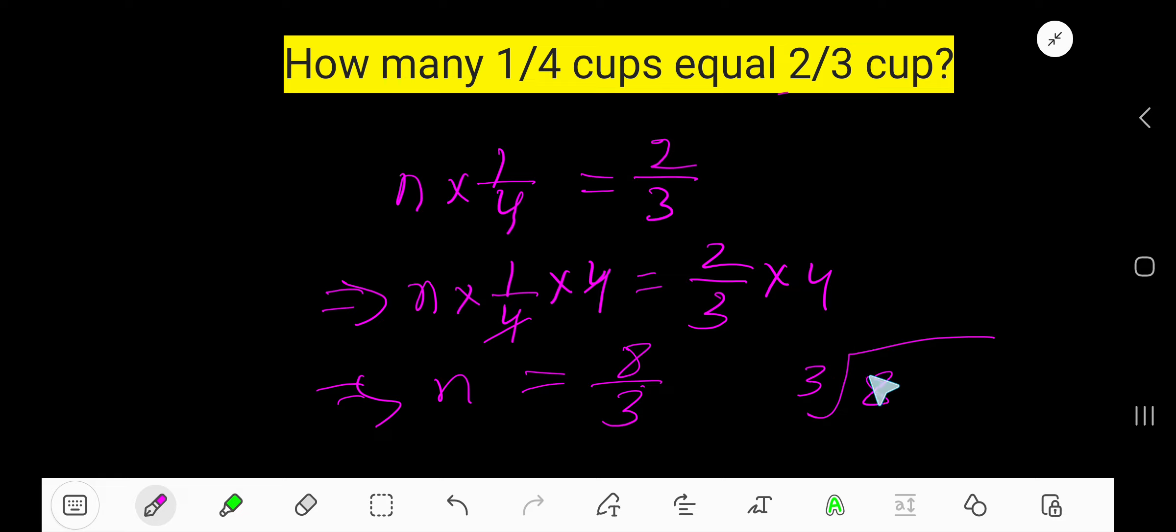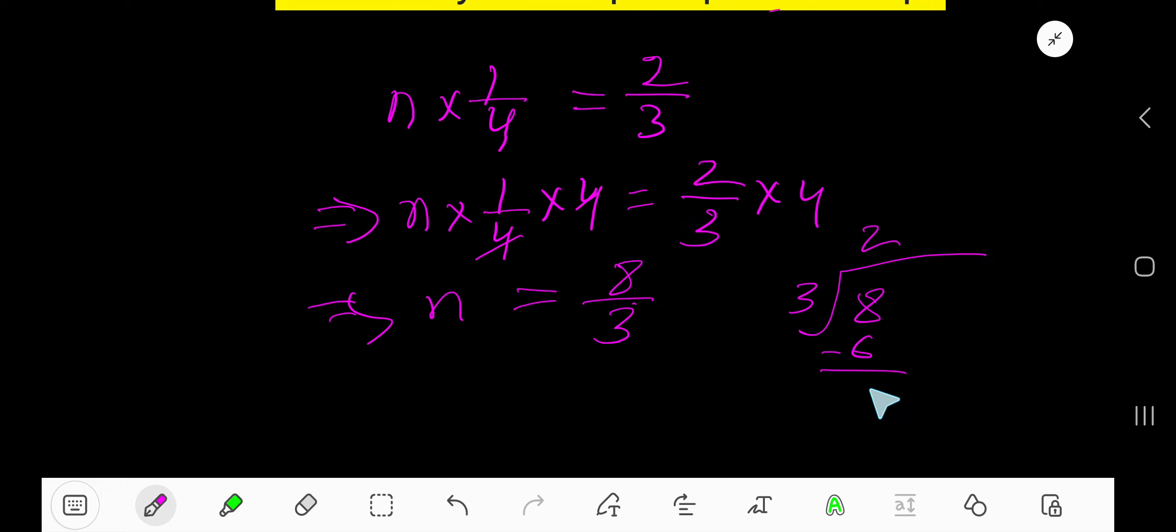To a mixed number: three goes into eight how many times? Two times. Two times three is six. If you subtract, your remainder is two. So the quotient will be the whole number.